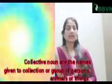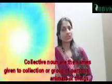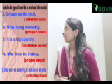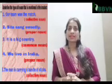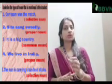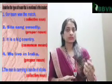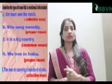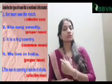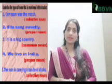I hope that all these three definitions are clear. Now let's solve the questions. The question is: underline the type of noun that is mentioned in the bracket. Some sentences are given and in the bracket you have nouns mentioned. For example, if there is a proper noun then you have to find out which word in the sentence is a proper noun and you have to underline it. So let's start.